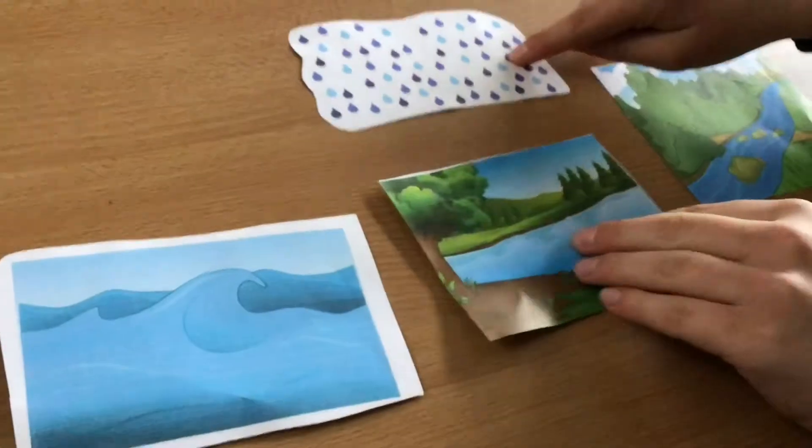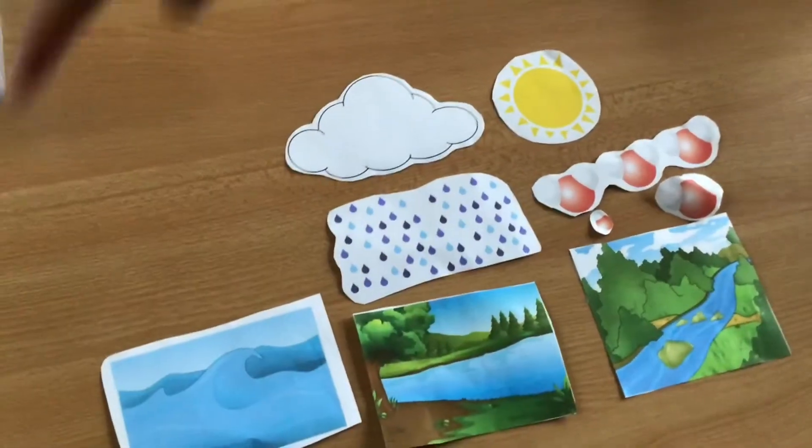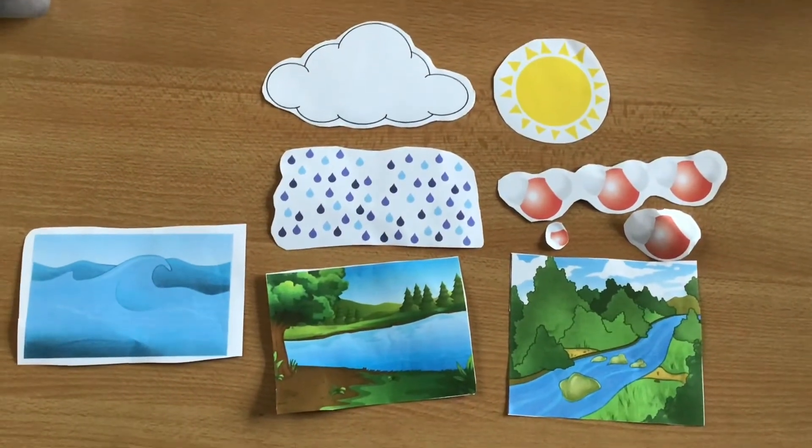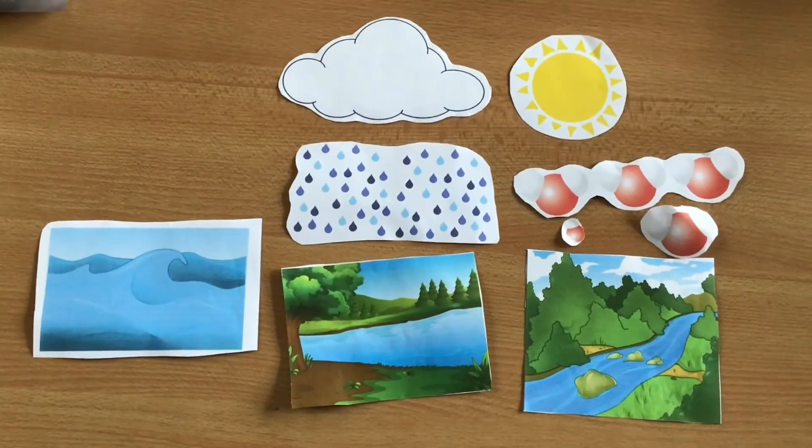lakes, and rivers. Water even seeps through the soil and becomes groundwater. This keeps on going and is called the water cycle. The water cycle is a continuous process of evaporation, condensation, and precipitation.